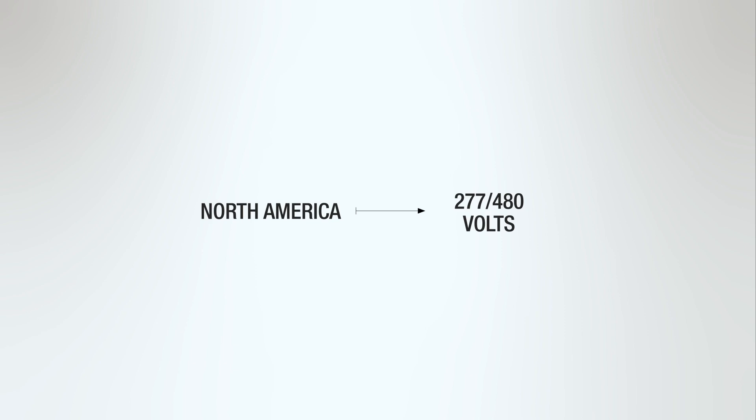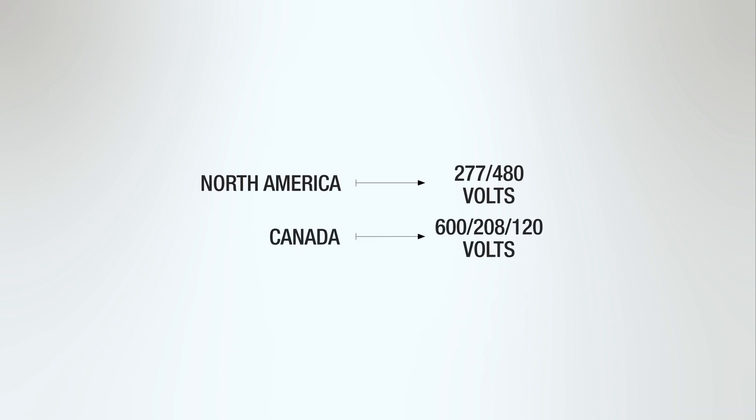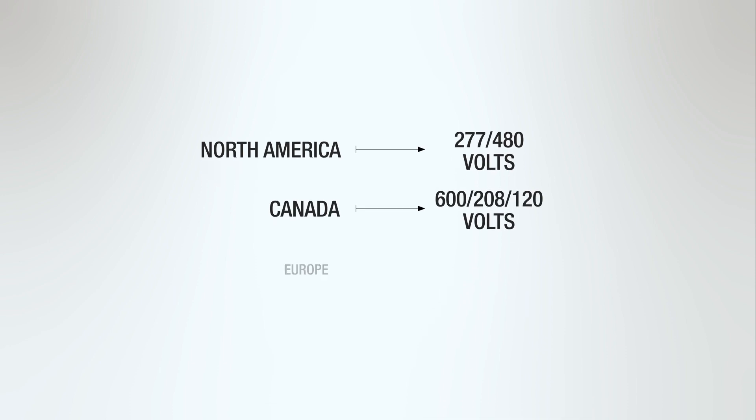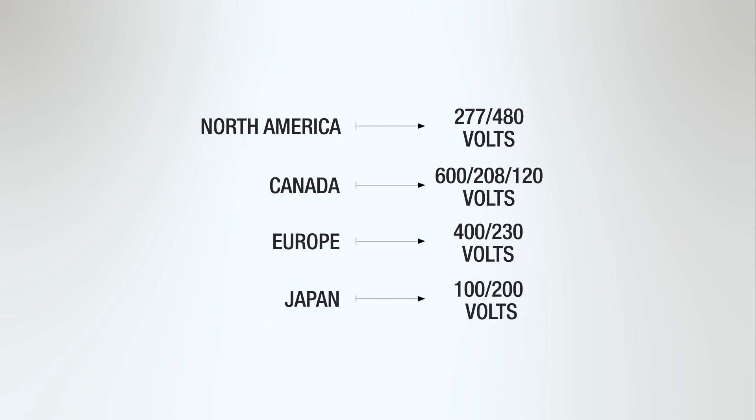Voltages vary in different regions of the world. For example, Canada uses 600, 208, and 120 volts, where Europe uses 400 and 230 volt systems, and in Japan, they use only 100 or 200 volts.